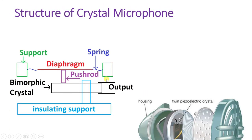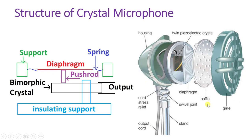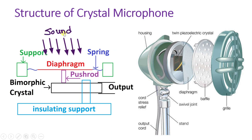Looking at the structure, there is a protection grill, then a baffle, and inside that there is a diaphragm with connections. In the internal structure, the diaphragm is connected with a spring. When sound is applied, the diaphragm moves and is connected with a push rod. This push rod applies pressure on the bimorph crystal.